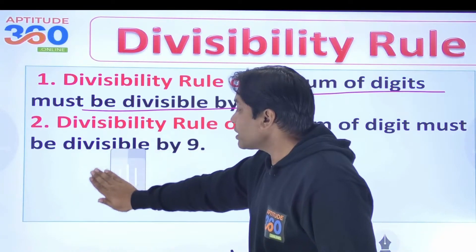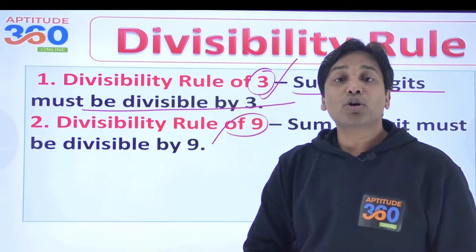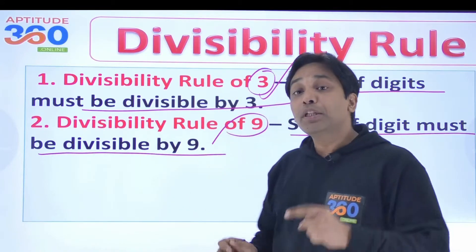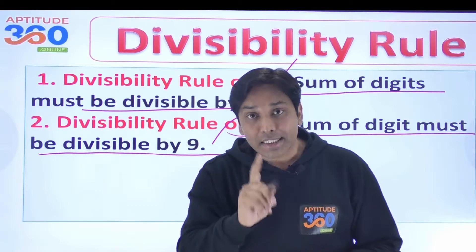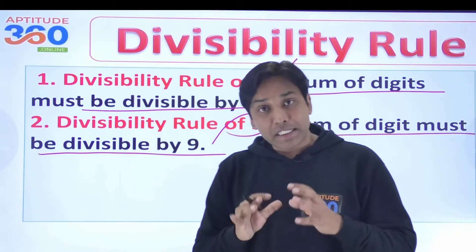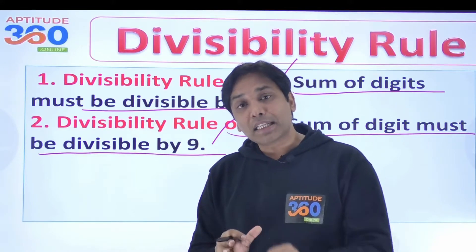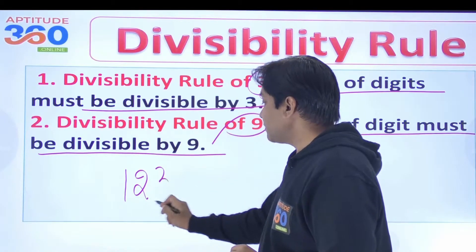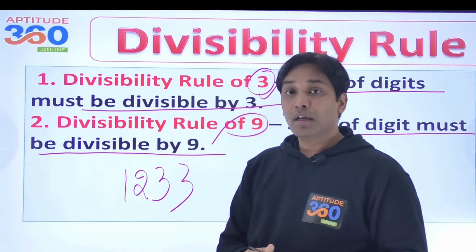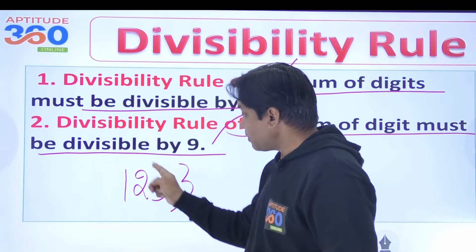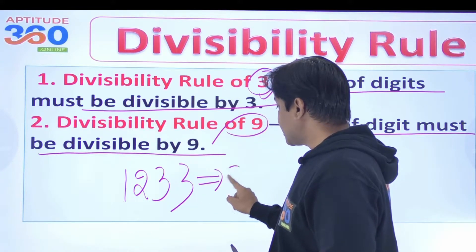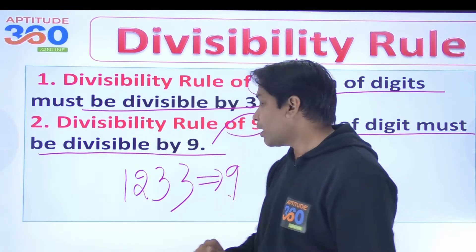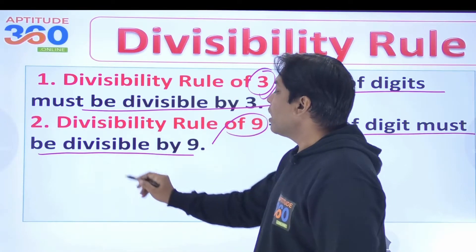Now what is the divisibility rule of 9? For 9, the sum of digits must be divisible by 9 — not just by 3, but by 9. If the sum of digits is a multiple of 9, the number is divisible by 9. For example, take 1,2,3,3 — the sum is 3+3+2+1 = 9, and hence this number is divisible by 9.